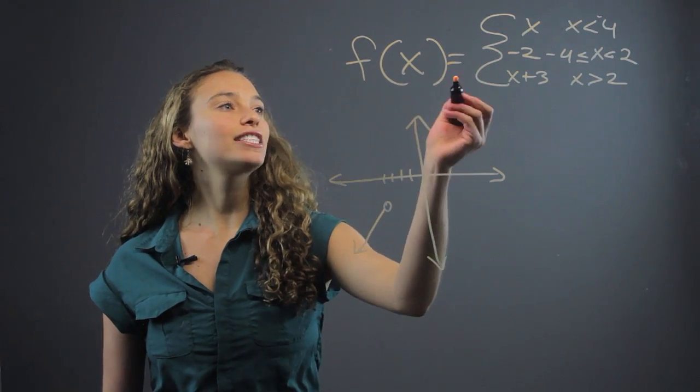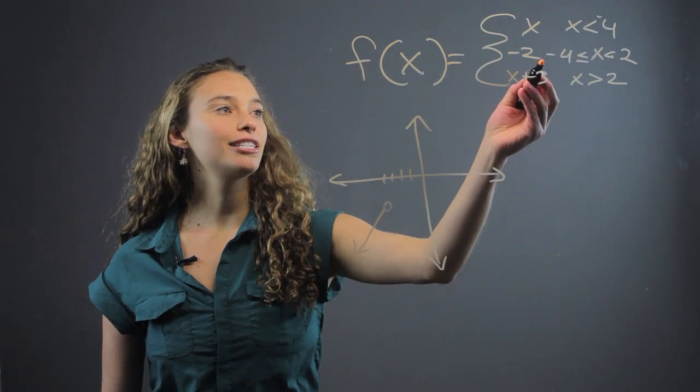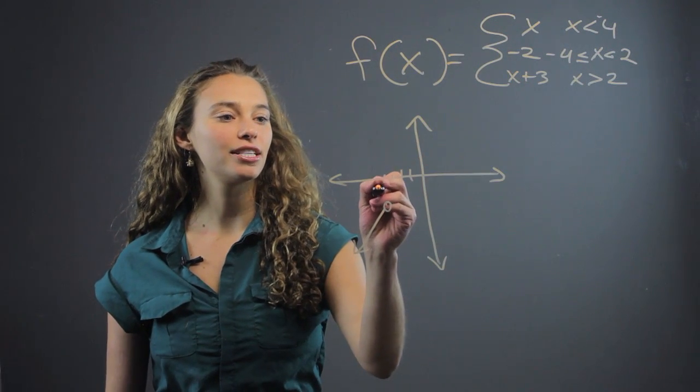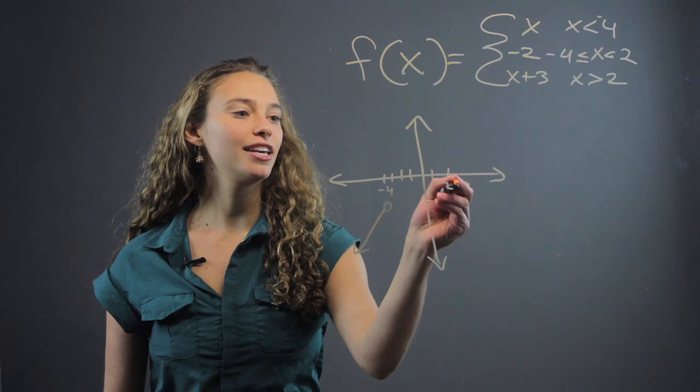Then we know that f of x equals negative two, when x is between negative four, which is here, and two, which is here.